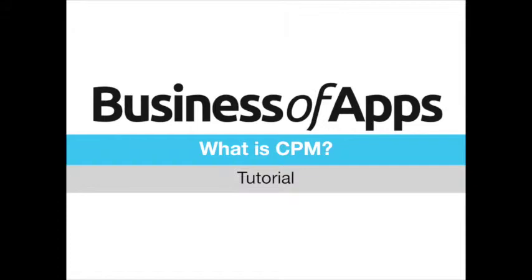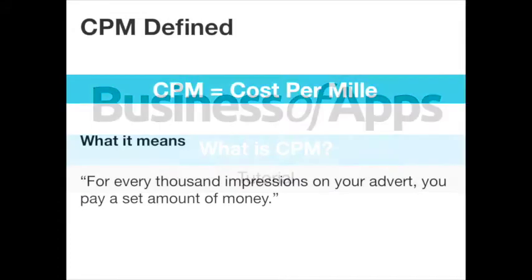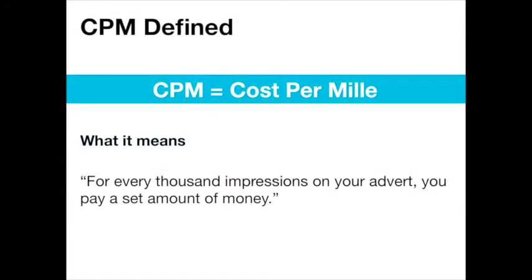So first thing first, what is CPM? Well, CPM stands for cost per mil and it's taken from the Latin for a thousand. It basically means that an advertiser will pay an ad publisher a certain amount of money every time a thousand people see the advert. It could be an interstitial, it could be a banner ad, or it could be another type of advert, but the key thing is a thousand impressions on an advert is when you end up paying money.